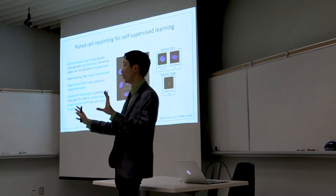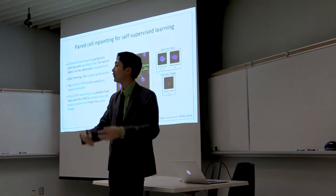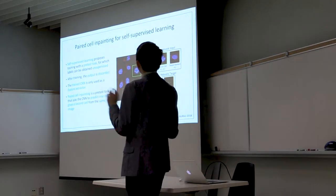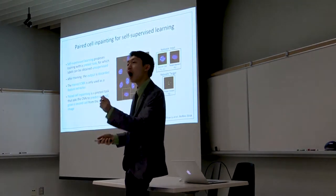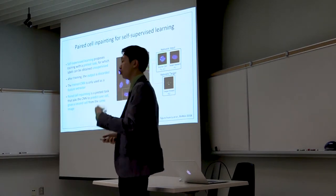When you train a machine learning model, you train it to do something that's useful for you, right? Like, you train it to classify some phenotypes or make a prediction that you can use in the end. What self-supervised learning does is that it's not the output of the model that's important, but it's the features that the model learns.